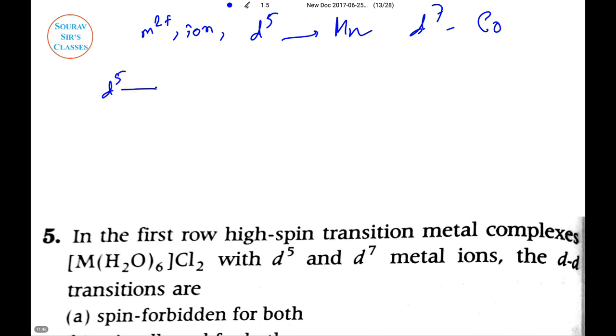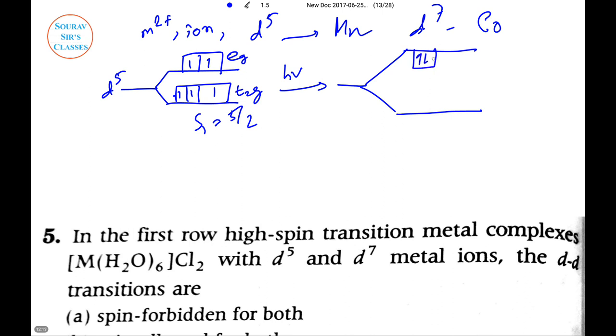Now let us see the allowedness of these configurations. For d5, we take the configuration's allowedness. There is t2g with three single electrons (1,1,1) and eg also with two single electrons. Here S1 equals 5/2. If we just go to the next part of this structure after excitation with hν, one electron moves up.